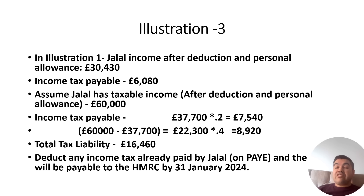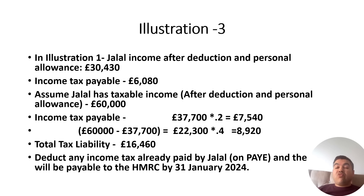Now assume Jalal has a taxable income after deductions and personal allowance of £60,000, which is more than the basic rate limit. The first £37,700 will be taxed at 20%, and then the remaining gap between £60,000 and £37,700 — which is £22,300 — will be taxed at 40%, as that falls in the higher rate band. The total tax liability is £16,460.